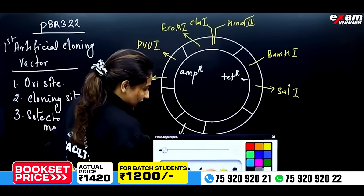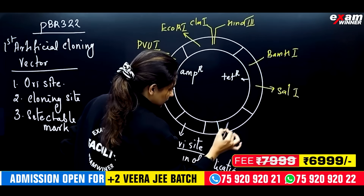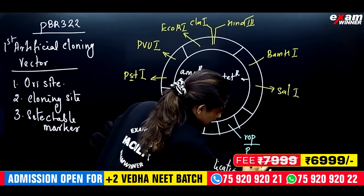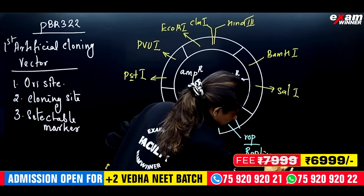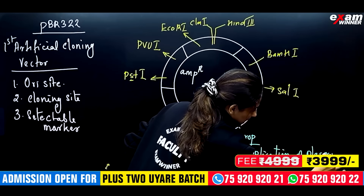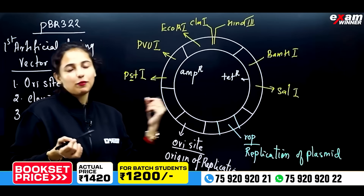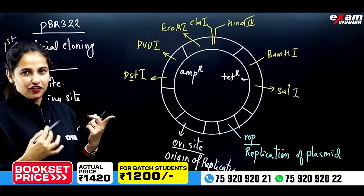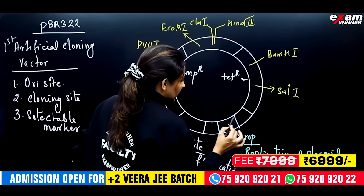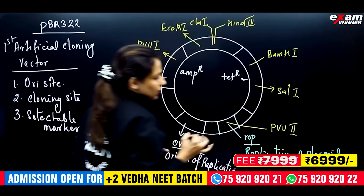Let's take another sequence here. That sequence, we call ROP. ROP stands for replication of plasmid. We insert DNA in the replication of plasmid. The DNA sequence is not available here. There is another enzyme, PVU2.